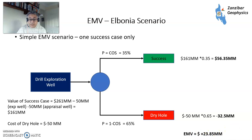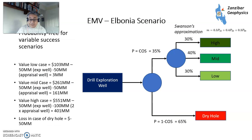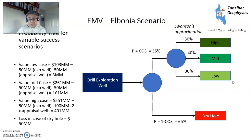That sounds pretty good — your successes will outweigh your losses if success happens, though it doesn't guarantee success. But what happens when you take variable scenarios into account? Here we use Swanson's approximation: 30%, 40%, 30%. So 30% chance of the high case, 40% chance of the mid case, 30% chance of the low case — representing the variability of potential value and reserves the field might have if successful. And there is still a 35% chance of getting onto the success branch, and a 65% chance of getting onto the failure branch — the dry hole.